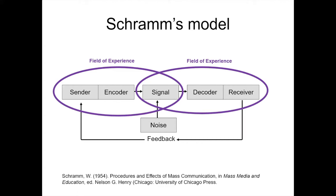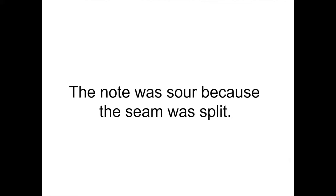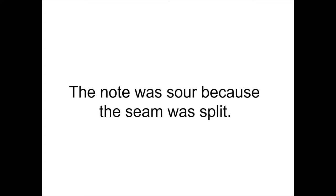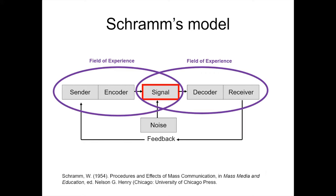Another very important element in SRAM's model is overlapping fields of experience between the sender and the receiver. That's where the signal lives — for a signal to make it successfully to the receiver, it needs to be within a shared field of experience. For example, if I were to say, 'the note was sour because the seam was split,' you probably know what all those words mean individually, but collectively — unless you've heard this before or you're a bagpipe player — you may not understand. A split seam means the bag is not holding air properly and it's impacting the sound. So why is this relevant to learning? When we choose examples for our learners, those examples must be understandable by both sender and receiver.